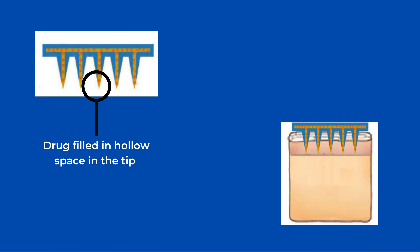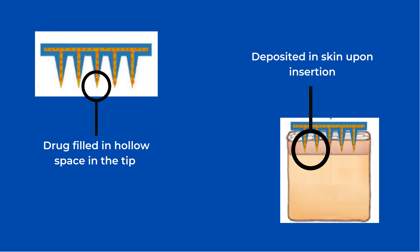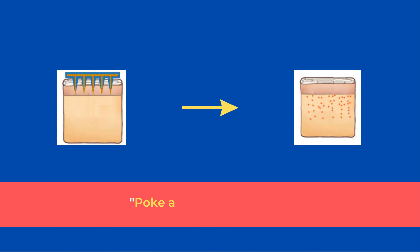In the hollow microneedle approach, the drug is filled into the hollow space in the tip of the microneedle, which is directly deposited into the epidermis or upper dermis layer of the skin upon insertion. In simple terms, this can be described as poke and flow.